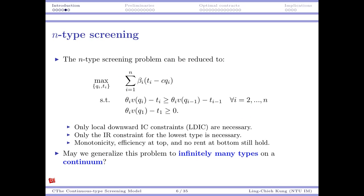We can do derivations showing the problem reduces so that only local downward IC constraints are necessary — we only need type 2 to not want to pretend to be type 1, type 3 to not pretend to be type 2, and so on. You don't need to worry about type 1 pretending to be type 5, or type 7 pretending to be type 2 — those are all redundant. Also, only one IR constraint is necessary: the one for the lowest type, theta_1.